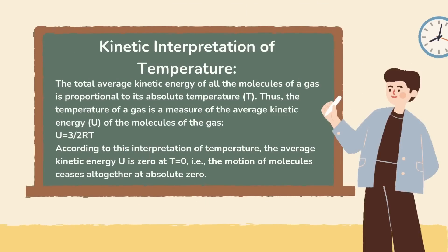Kinetic interpretation of temperature: the total average kinetic energy of all the molecules of a gas is proportional to its absolute temperature T. Thus, the temperature of a gas is a measure of the average kinetic energy U of the molecules of the gas, where U equals three-halves RT. According to this interpretation, the average kinetic energy U is zero at T equals zero — that is, the motion of molecules ceases altogether at absolute zero.